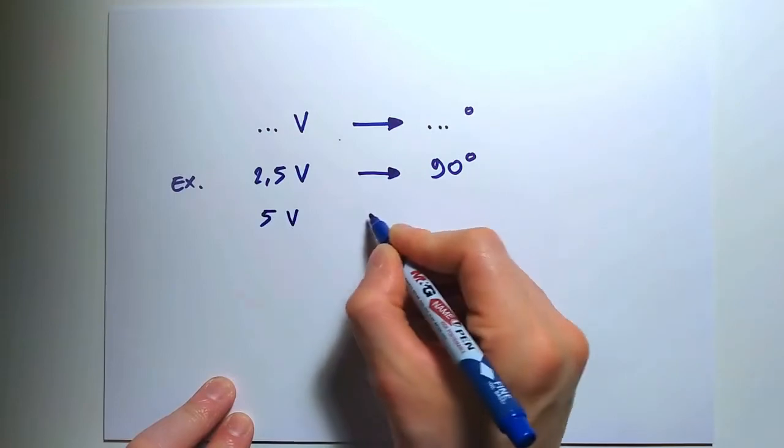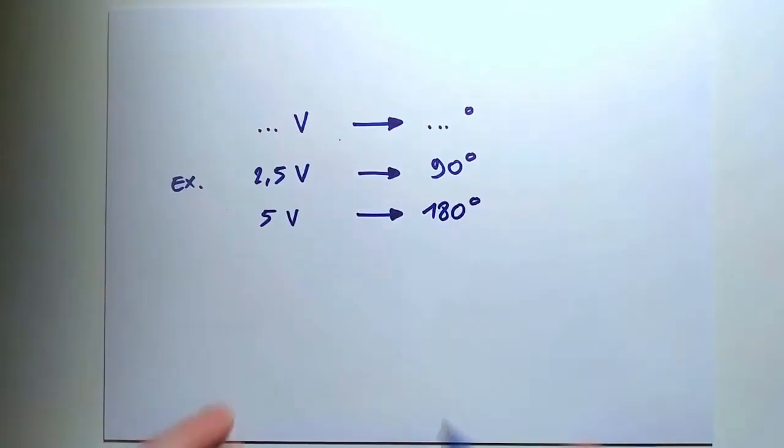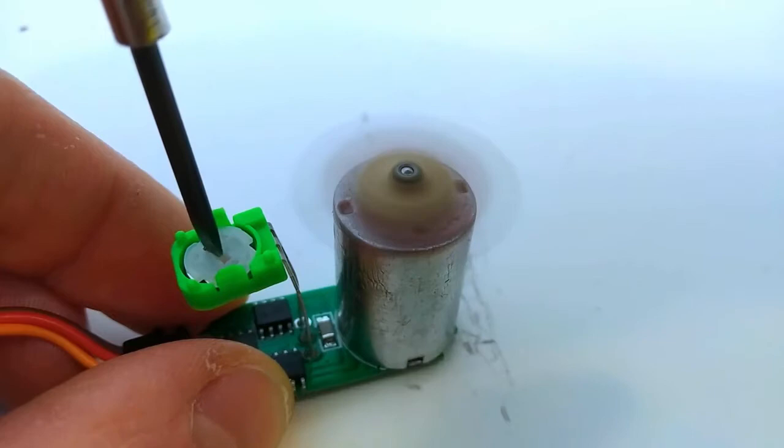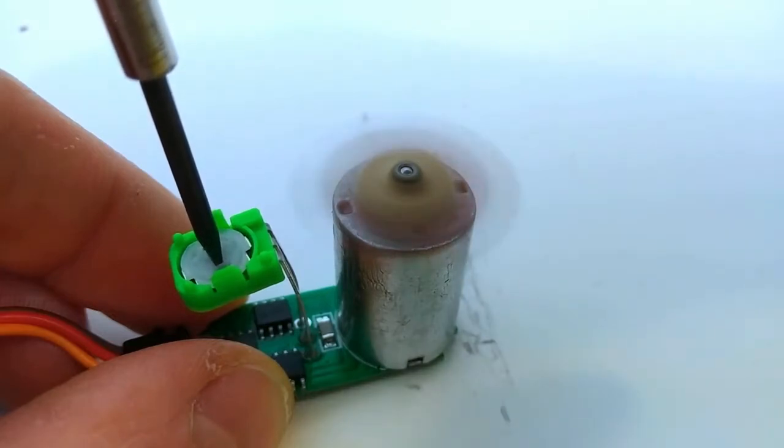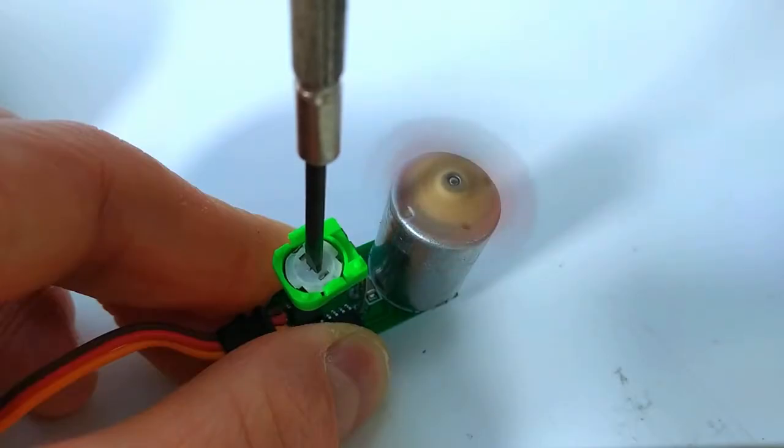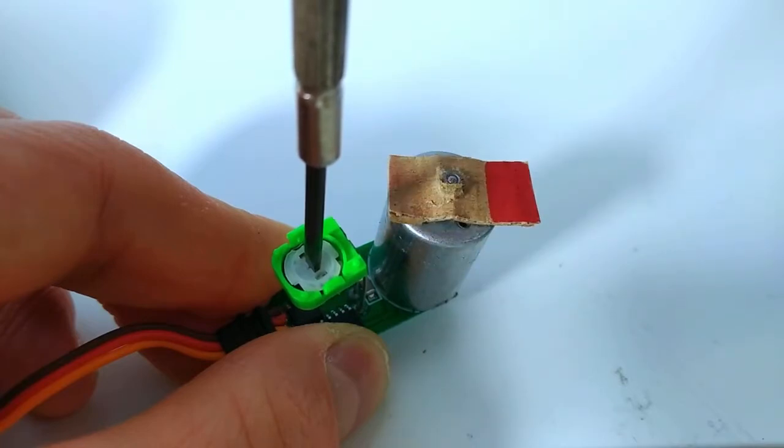For example, 2.5 volts would mean that the servo is at 90 degrees. Or 5 volts would mean it's all the way at 180 degrees. As the servo moves closer to the desired position, the voltage at the potentiometer will reach that value and the motor will stop spinning.